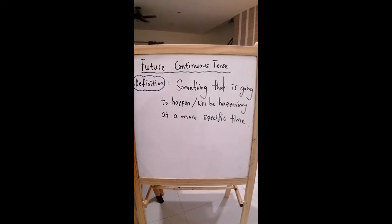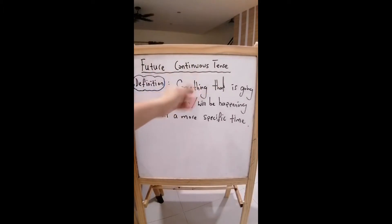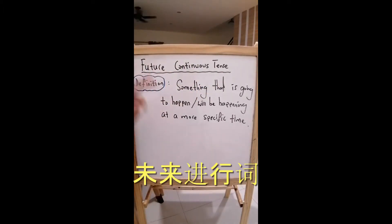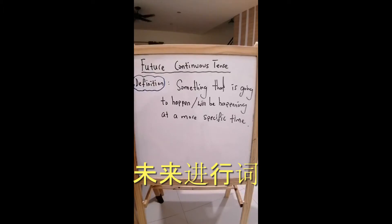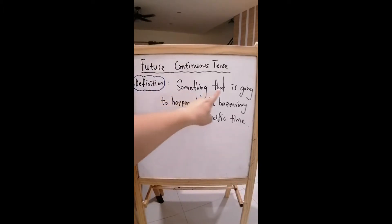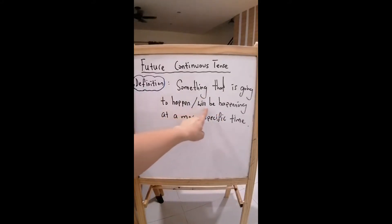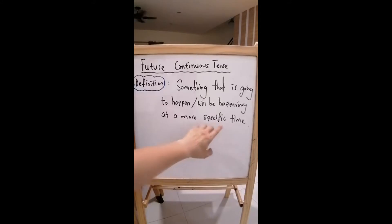For the next lesson, we are going to look at future continuous tense. What is this? We look at the definition: something that is going to happen or will be happening at a more specific time.